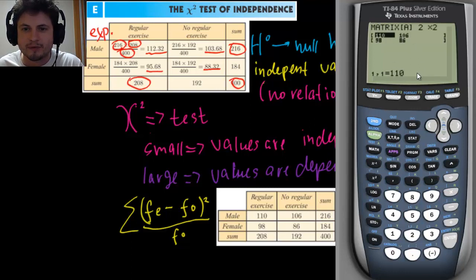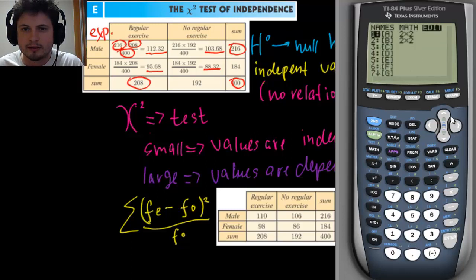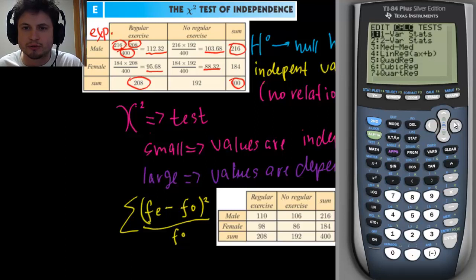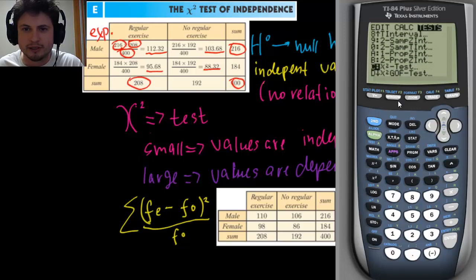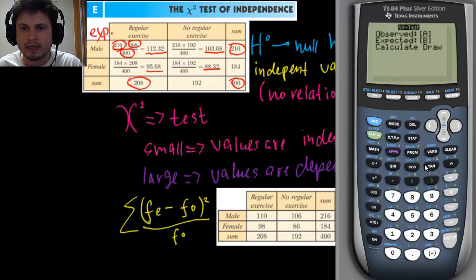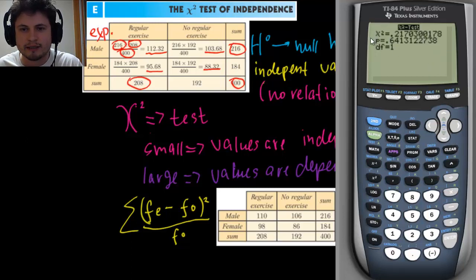Once more: press Second, then X to the power of minus one — also known as Matrix, written in blue — then go to Edit and edit matrix A. Once you've done this, go to Stat, click the Stat button, and instead of going to Calc, go to Tests. Scroll down to find the chi-square test — it has a squiggly X with a square. Click on it; the observed value is A. We don't have a separate expected value, so just click Enter, Enter, and Calculate.